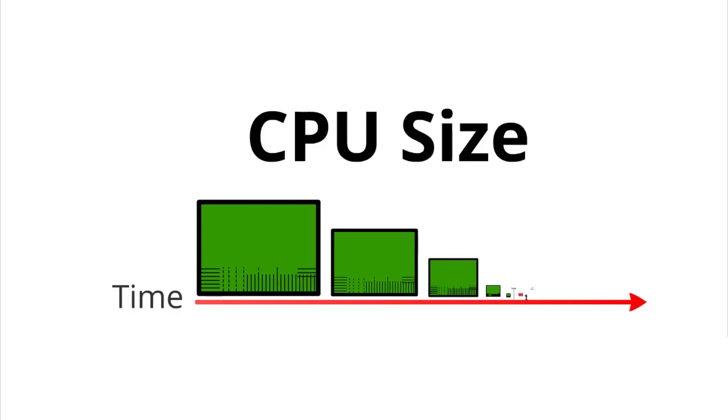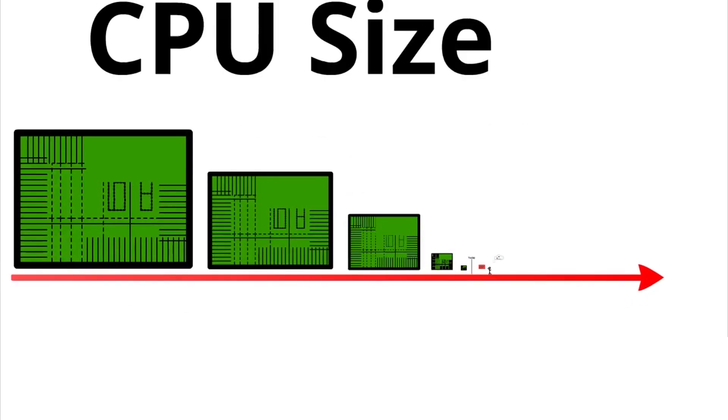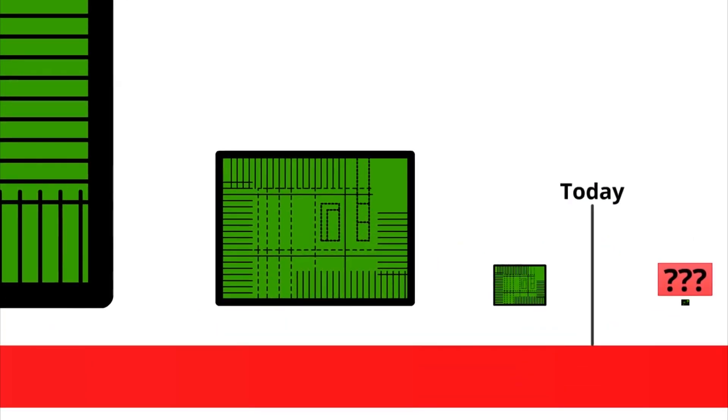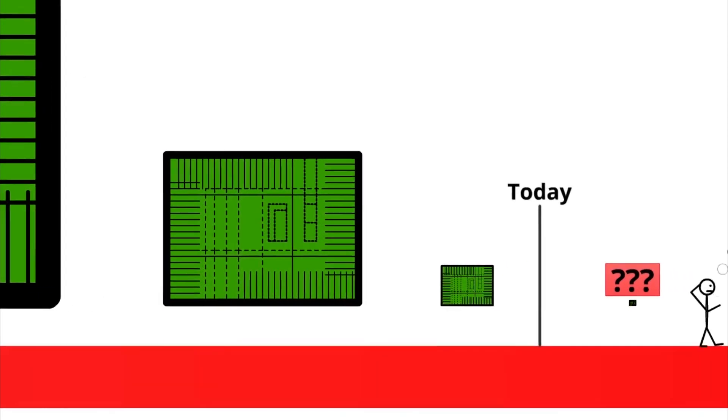Computer chips have been shrinking every year, and they require the complicated placement of trillions of tiny wires. This is getting difficult though, as we are reaching limits to how small we can focus light, the traditional method of making small patterns such as wires.